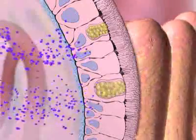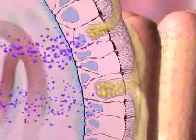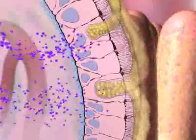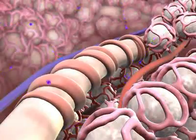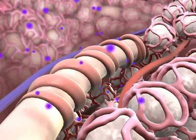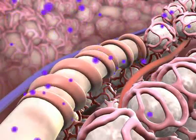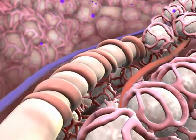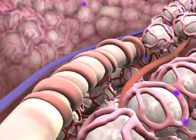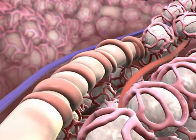After the release of mucin granules from goblet cells, the mucin may expand several hundred-fold in size. The binding of histamine to H1 receptors on the smooth muscle of the airways and intestines leads to bronchoconstriction and increased gastrointestinal motility.